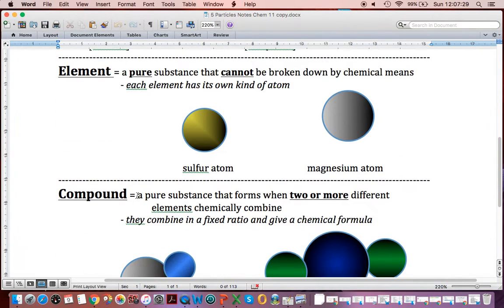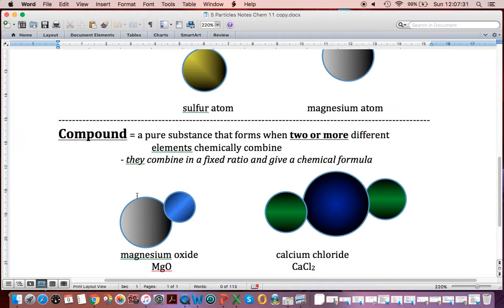And when we get to compounds, as soon as we have different elements joined together, combined in a fixed ratio, we have a compound. So here's magnesium oxide, MgO, and here's calcium chloride, CaCl2. And you can kind of tell this is the calcium, and these are the chlorines. Possibly not to scale.